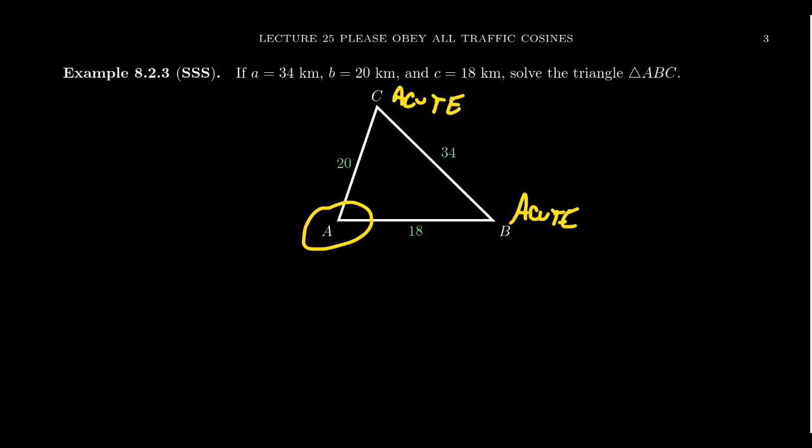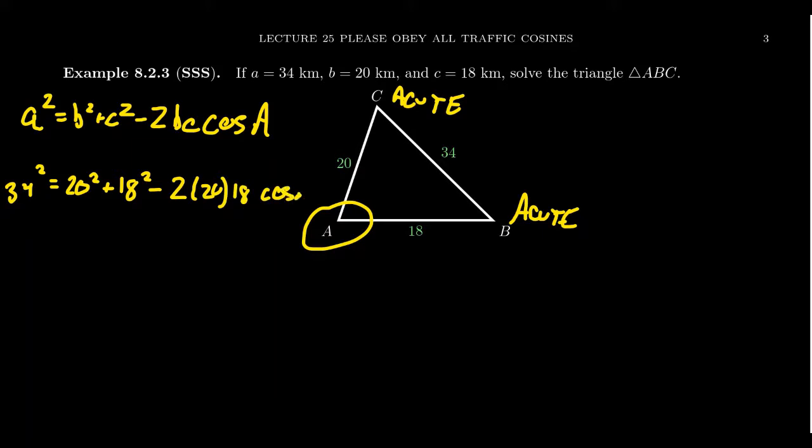How are we going to use the law of cosines? Since we're focusing on angle A, this would look like a² = b² + c² - 2bc cos A. Plug in the information we know: a is 34, b is 20, c is 18. If you swap b and c around, it makes really no difference. Minus 2 times 20 times 18 times cosine of A.